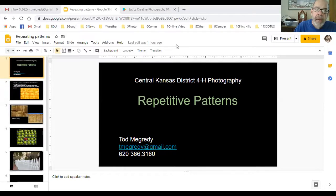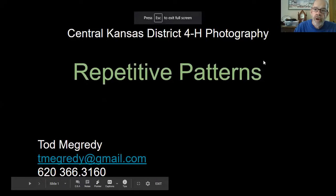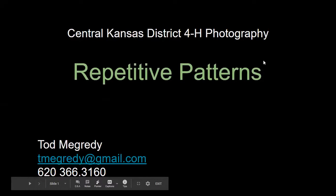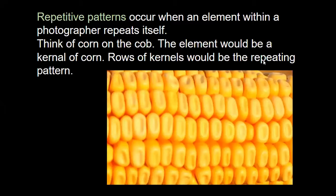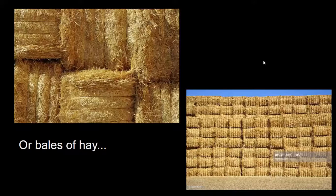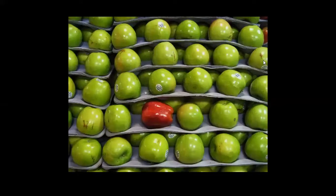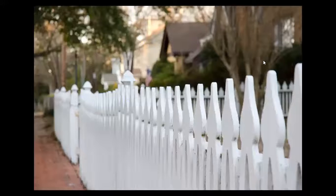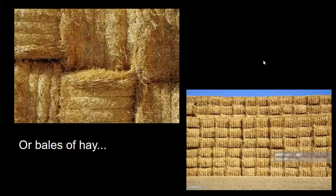Repeating patterns are essentially what happens when you take an element in a photo and it repeats. An element of a photo might be something like a kernel of corn — by itself, one element — but if you think of repeating patterns, you think about more than one kernel, more than one element that keeps repeating over and over again. So the corn kernel would be the repeating pattern. This also applies to something such as bales of hay, apples at the grocery store, or picket fences. Notice how in each of these photographs there's a pattern that repeats.